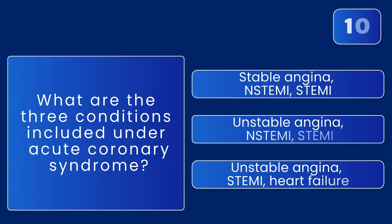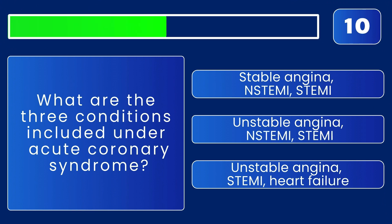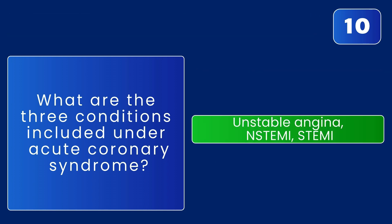What are the three conditions included under acute coronary syndrome? The three components are unstable angina, non-ST elevation myocardial infarction, and ST elevation myocardial infarction.